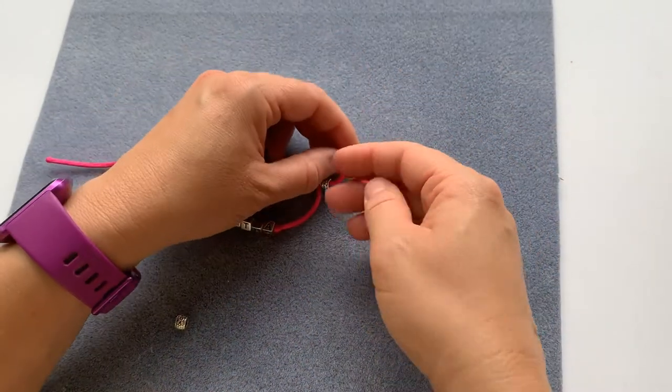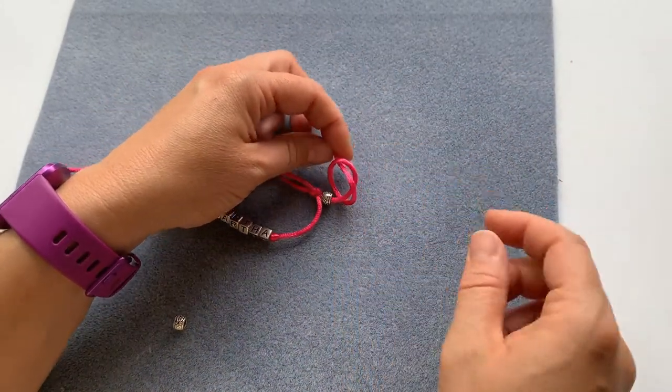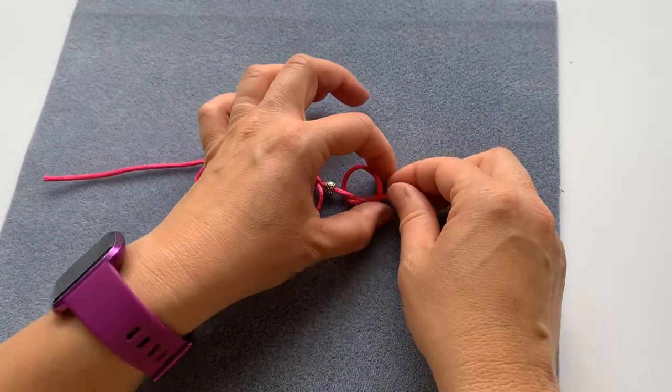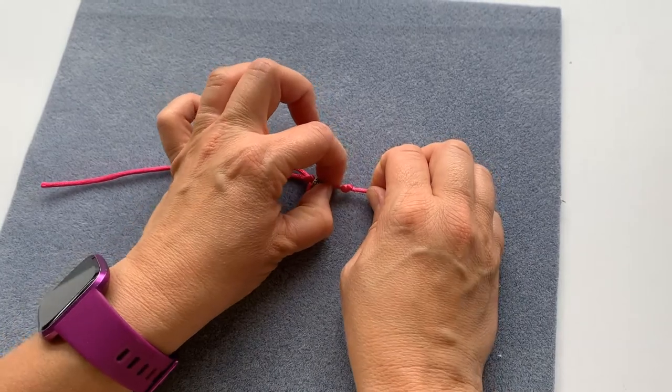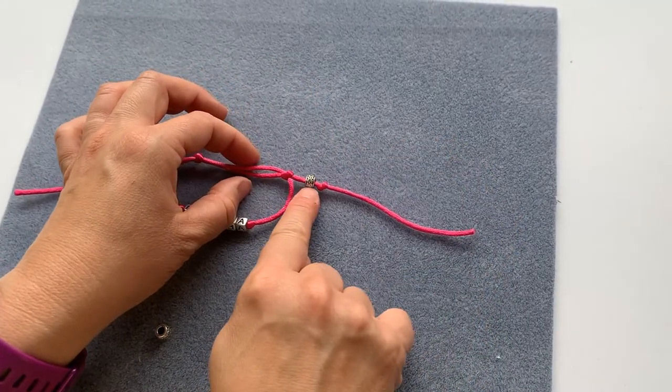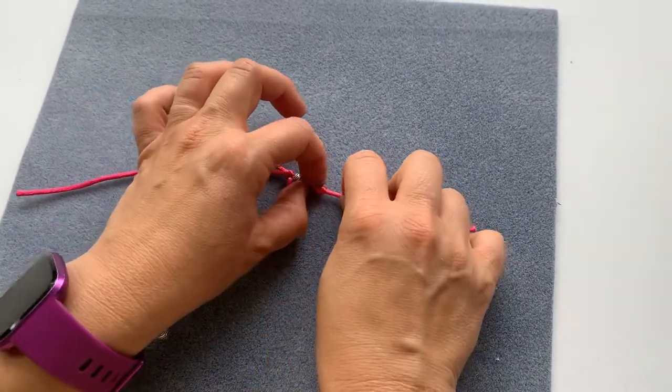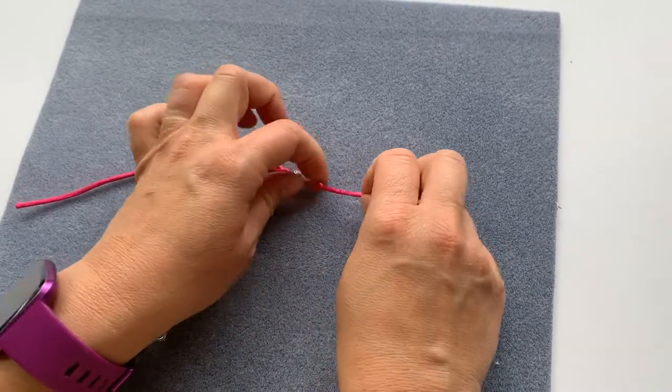And then I am just going to do a simple overhand knot and pull it tight. So I'm leaving a little gap and then tied another knot, putting that on quite tight.